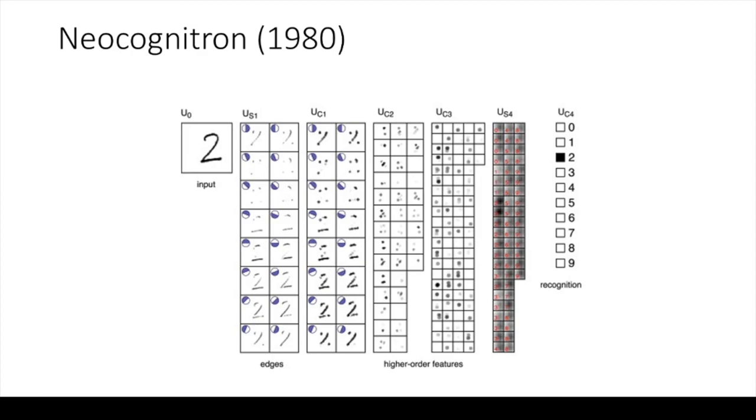The neocognitron was successful at recognizing handwritten digits, and was able to recognize figures even when they had shifted position and had been deformed. Sadly, though, it did not perform so well when it was applied to more complex tasks.